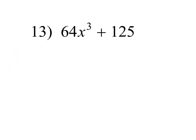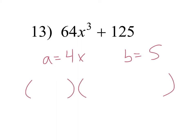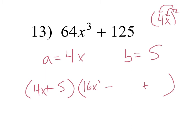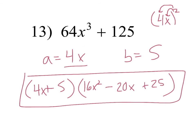Let's go to 13. What's our a? Four x. And what's our b? Five. How do our signs go in the sum of cubes? Plus, minus, plus. What's going to go in the first parentheses? Four x plus five. Then what comes next? Four x squared — remember, we need to square the four and square the x, so it's 16x squared. What comes next? A times b — that's five times four x, so 20x. And then last? Five squared is 25. Why is it plus five? Because it's a plus b in the sum of cubes formula.